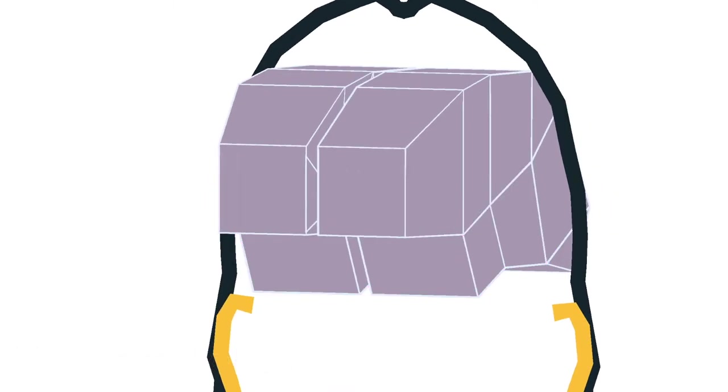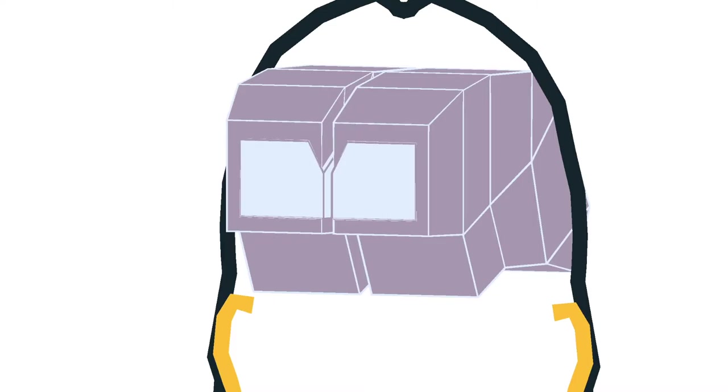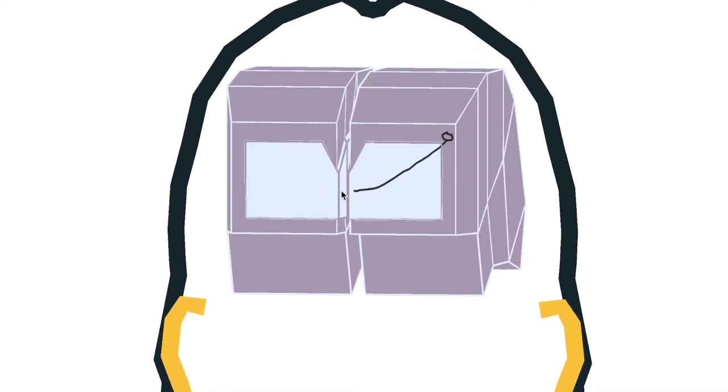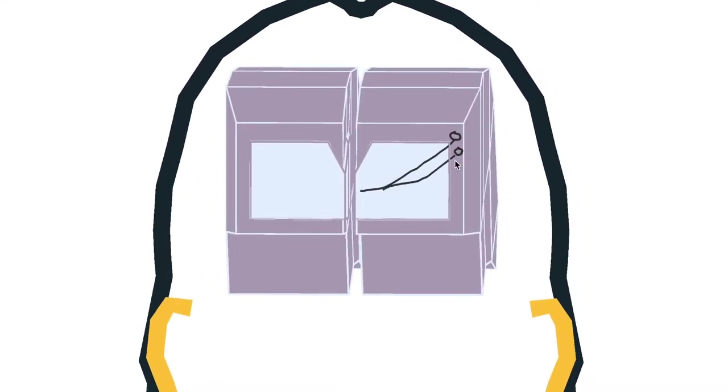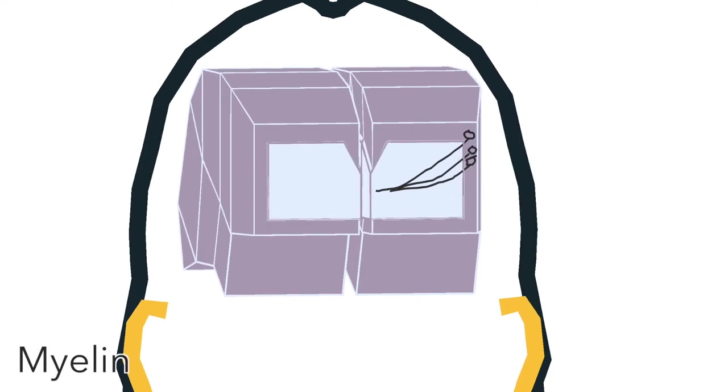If we cut the frontal lobe now, we can see the grey matter only goes for a centimeter or so. And beneath it is white matter, axons clumped together. Axons are surrounded by this fatty substance called myelin, which makes them look white.